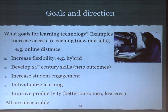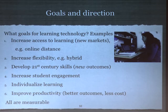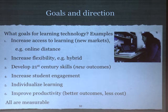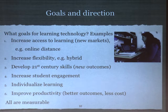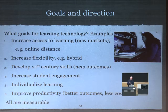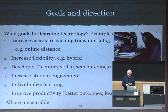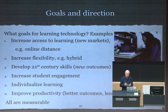Develop 21st century skills — there you're trying to get new outcomes. You're not trying to do the same thing better, but focusing on things that may have been less important but are now more important: problem-based learning, getting people to solve problems, thinking critically, independent learning skills, because that's what they're going to need when they leave university.